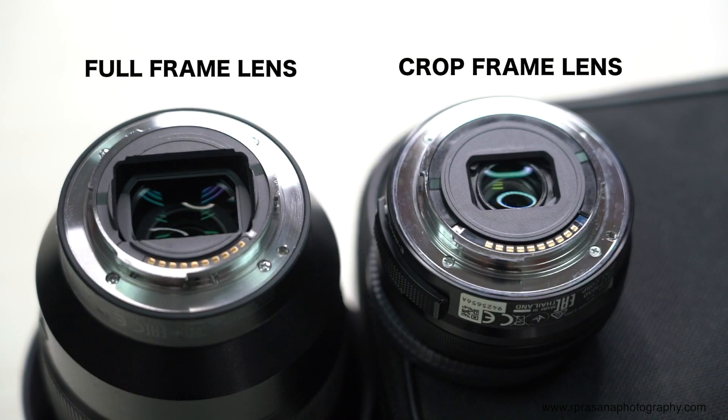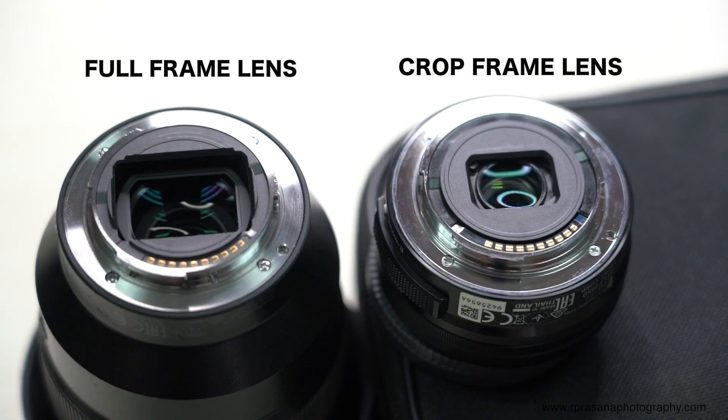First of all, we have crop sensor cameras. For crop sensor cameras, we use Sony's E series lenses. If you look at the image, the image circle is very small. The E mount E series lenses include the 2.8 lenses and the entry-level lenses — these are the crop sensor series lenses.